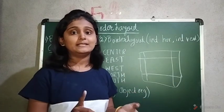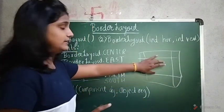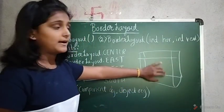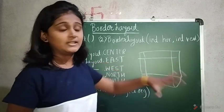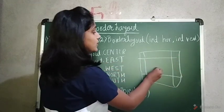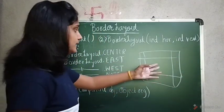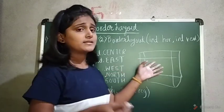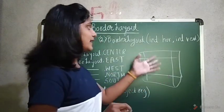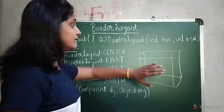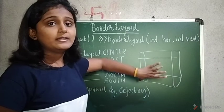The north, south, east, and west are the edges, and the center is also a part. So these — north, south, east, west, and center — are the parts of a border layout where you arrange your components.